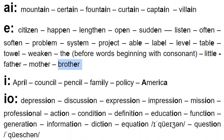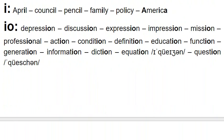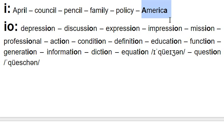Let's take a look at spellings with I. April — not 'April', the month of April. Council. Pencil. Family. Policy. America — we have three schwas here: this A, this I, and this A. America.